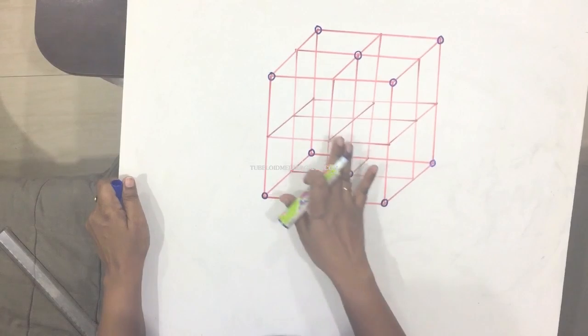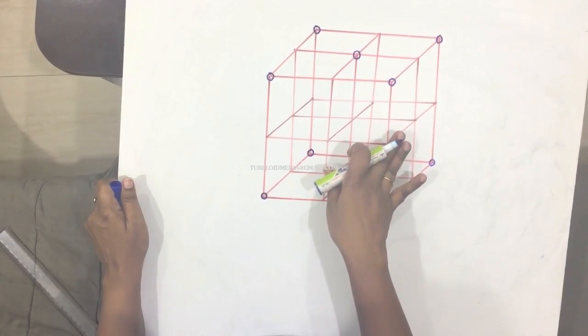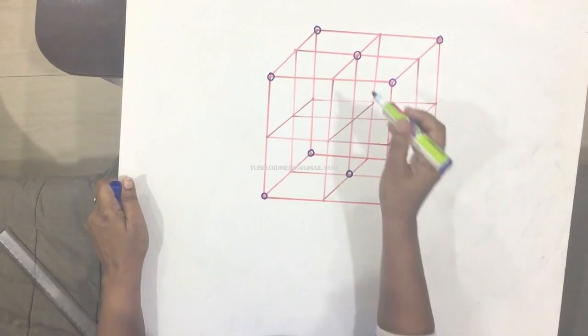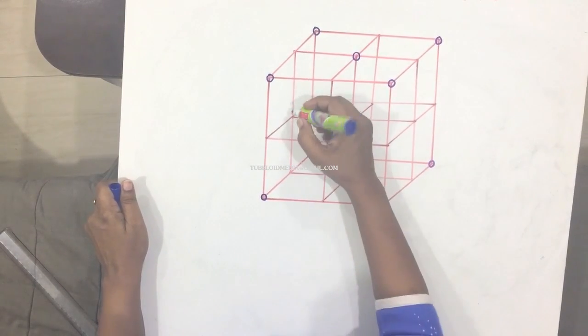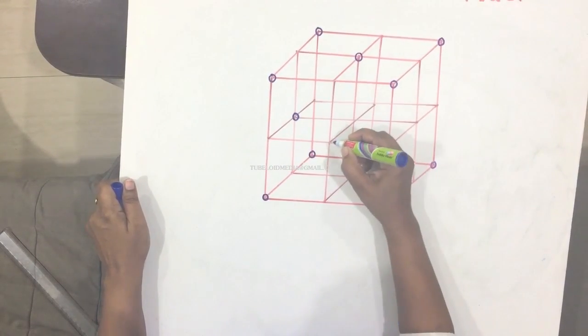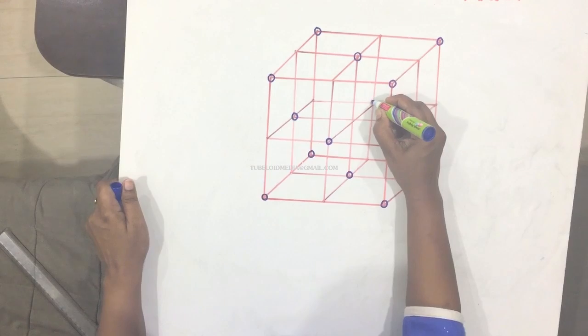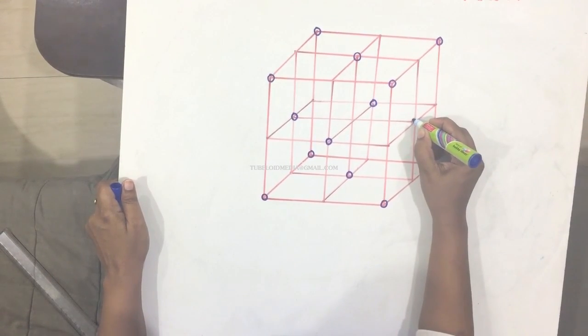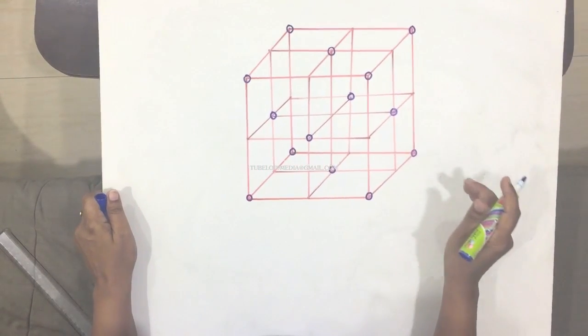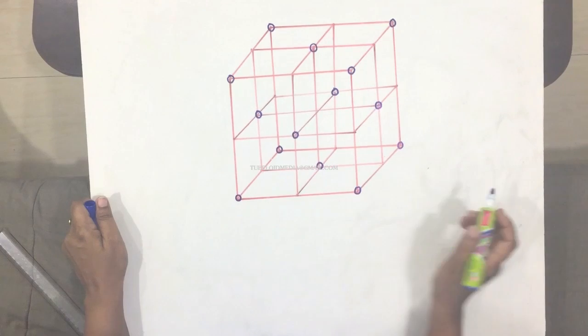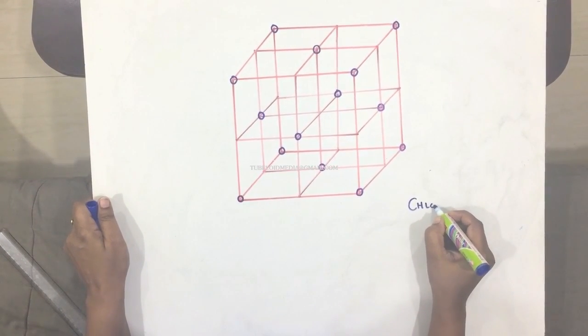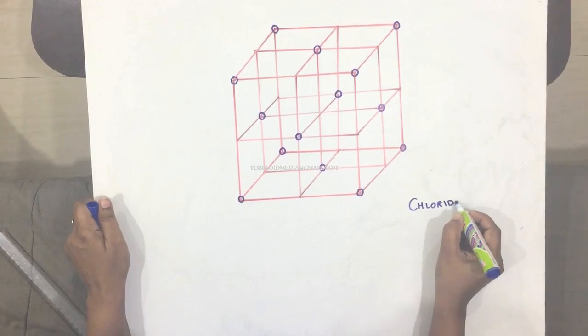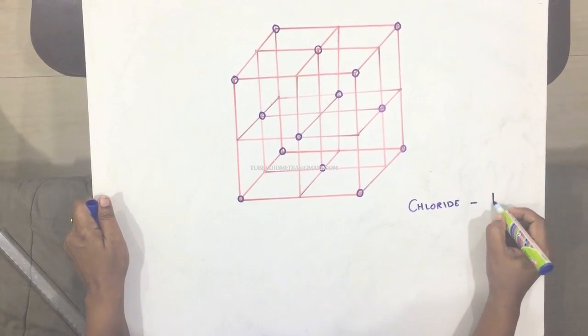So we have ten now. So if you go to the middle layer, we have four. So now here we have five plus five, ten, eleven, twelve, thirteen, and fourteen. So chloride we have fourteen ions. I will just write it down here. Chloride is fourteen.